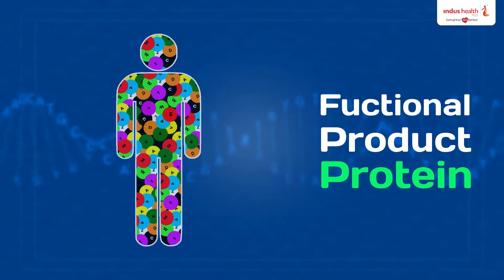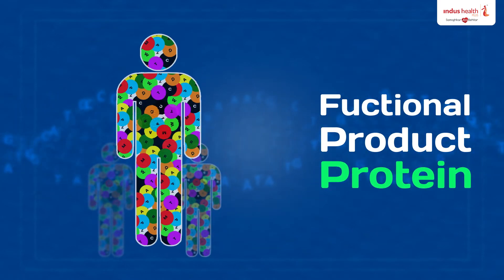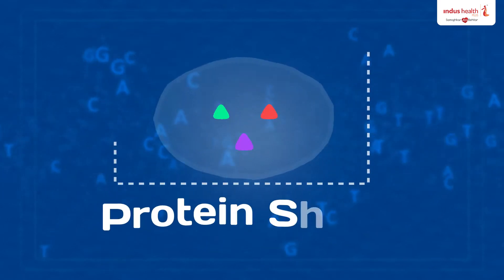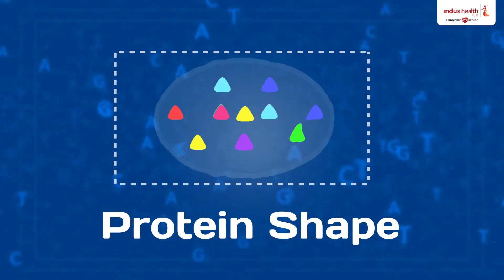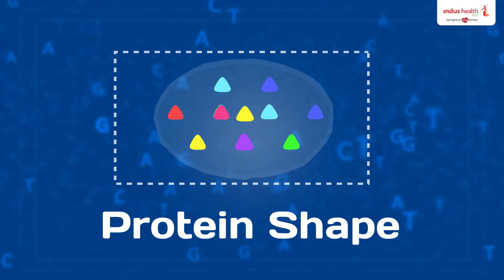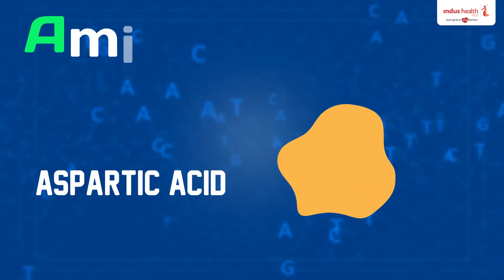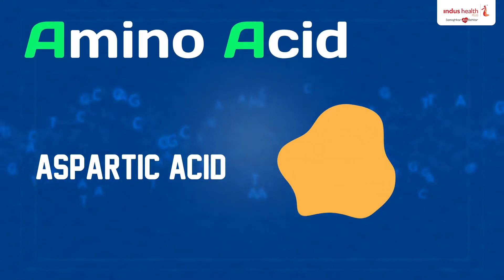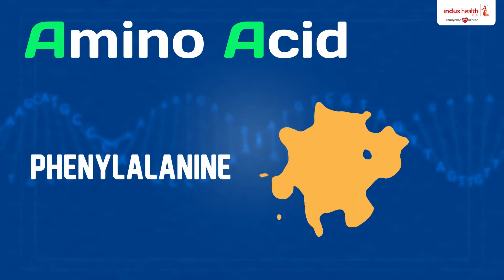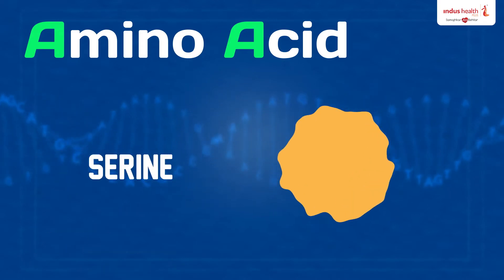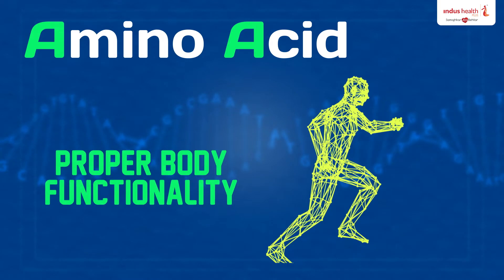One of the functions of protein is to create life. Proteins have to be formed in perfect shape to function correctly. DNA tells the amino acids to form themselves into perfect shapes in order to carry out body functionality.